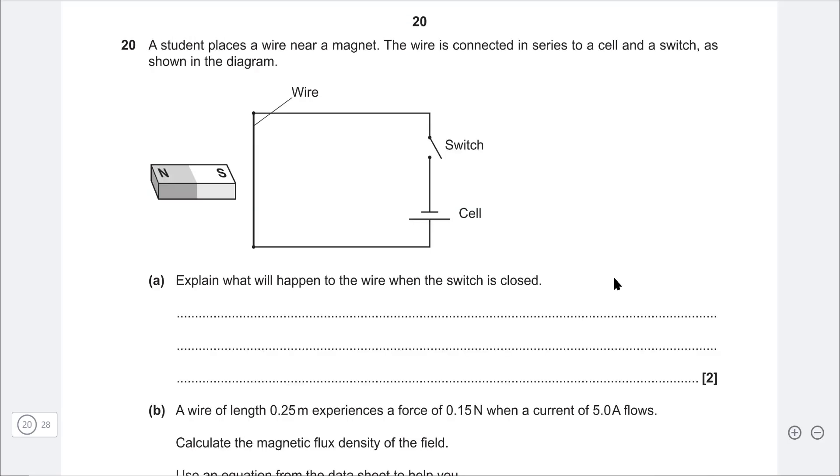Okay, let's do a longer written question. A student places a wire near a magnet. The wire is connected in series as shown. Explain what will happen to the wire when the switch is closed. So we know that there's going to be current that runs through the switch, but the current that runs will create its own magnetic field. So we can say that the current in the wire will create a magnetic field.